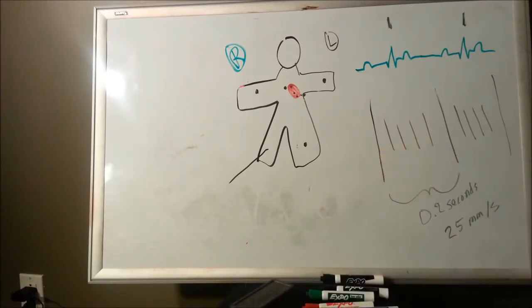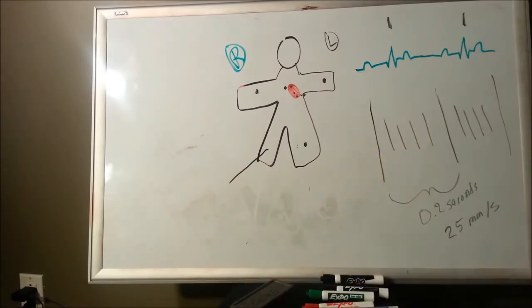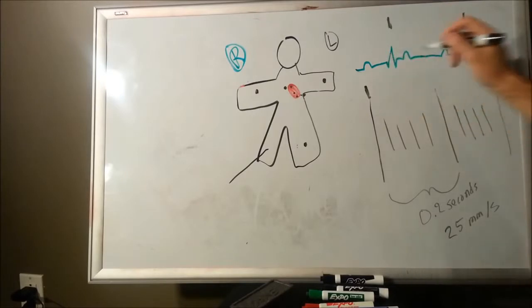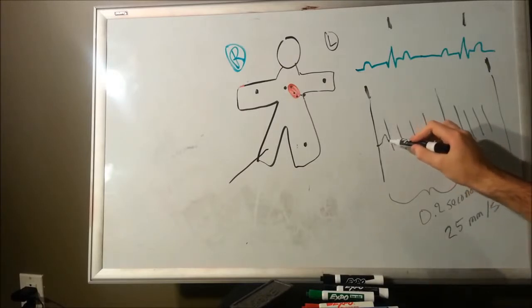You can determine the heart rate pretty easily using either of a couple techniques. One is, sometimes the EKG papers will have either three or six second printouts. Depending at the top or sometimes at the bottom, you'll see these little notch marks.